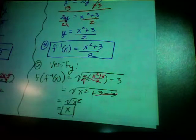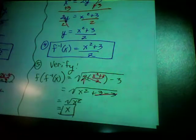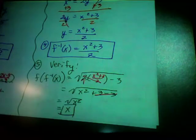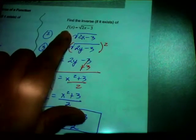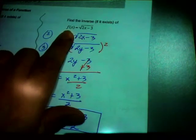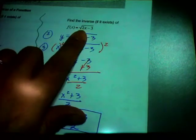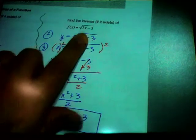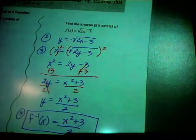The horizontal line test tells you number 1 if there is an inverse, and the verification step 5 tells you whether you got it correct. It should always come out to be x — it will always be x. If they use other variables like a or b, I would switch those variables out for x and y so that it will always come out to be x and you won't be confused.